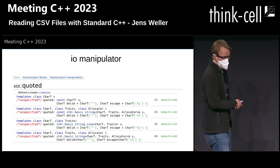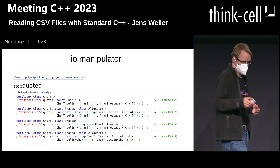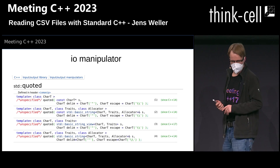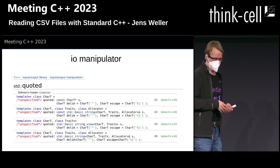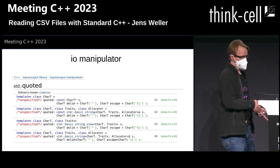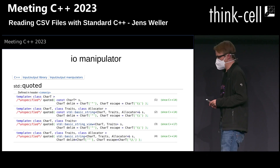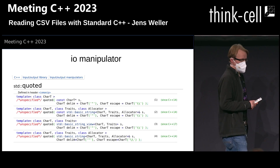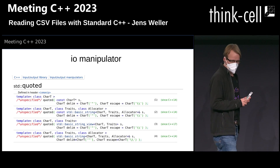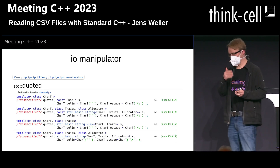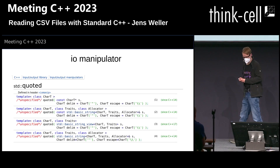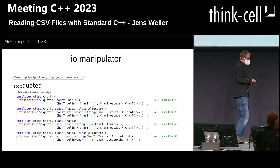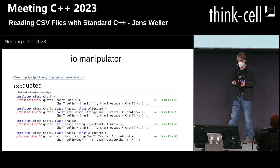Maybe someone could show us that next year. The quoted facility in the standard goes back to C++17. It's an IO manipulator, so you can read or write a quoted string from an IO stream. When I read a CSV file, I like to work with string views because I don't want extra allocations. So using a string stream and reading into another string via std::quoted is not really an option.